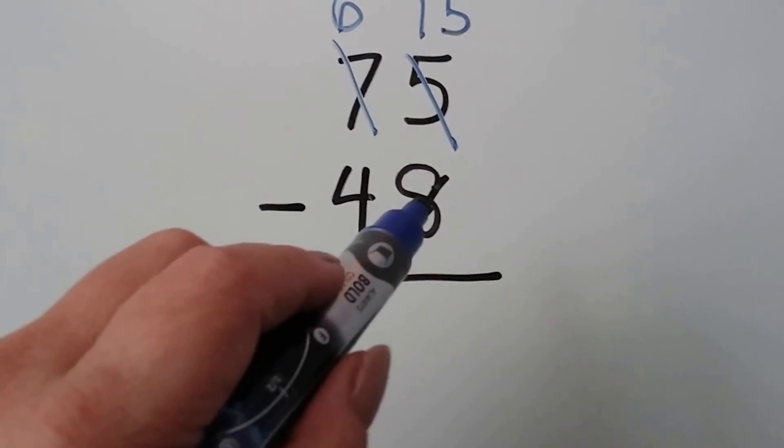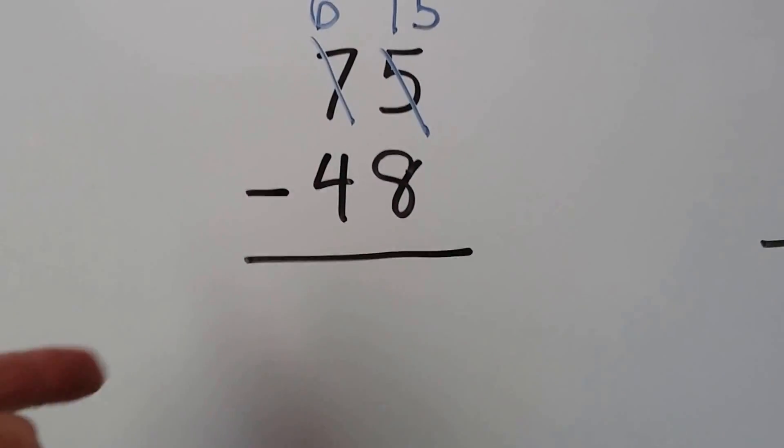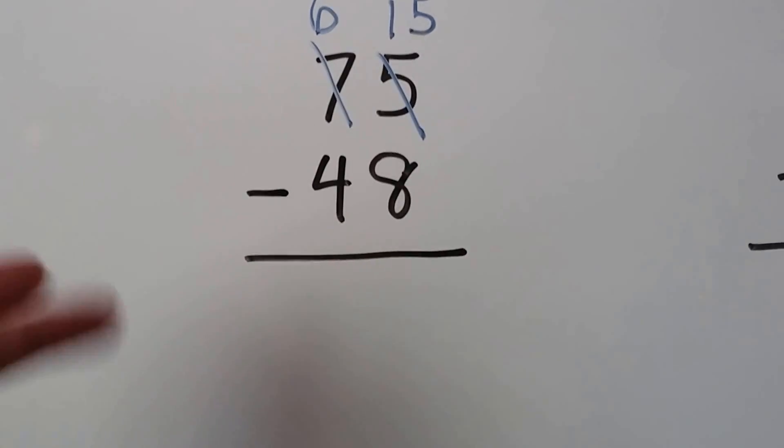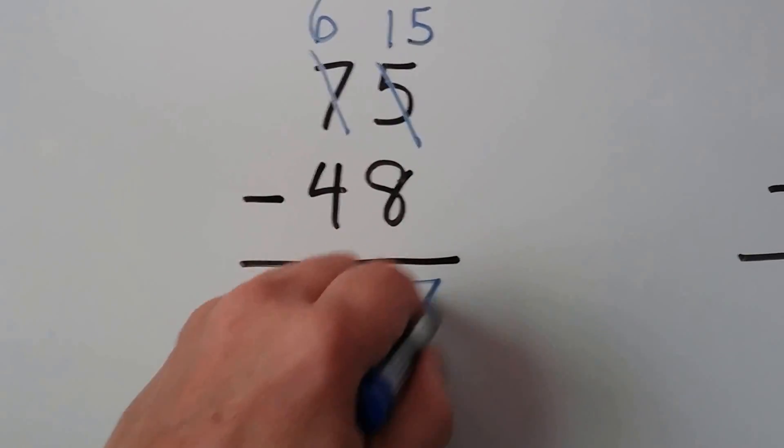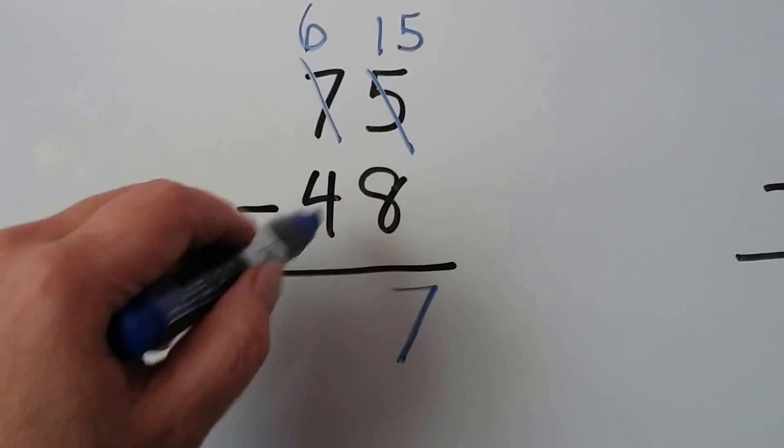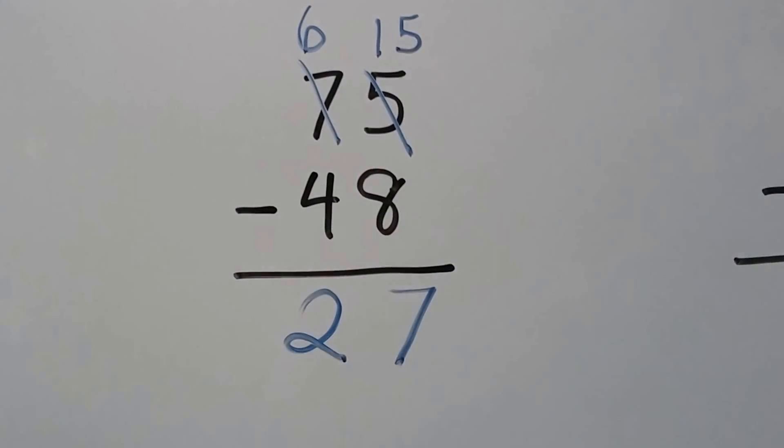15 minus 8 is 8, 9, 10, 11, 12, 13, 14, 15. It's 7. And 6 minus 4 is 2. We get a 27.